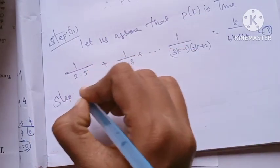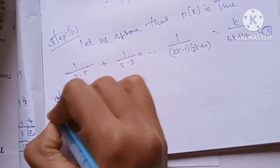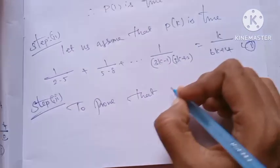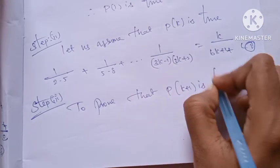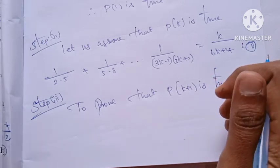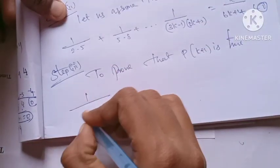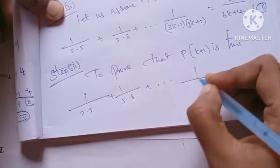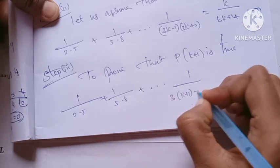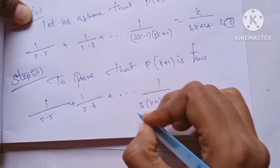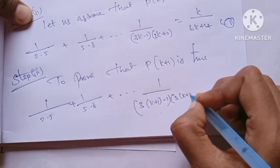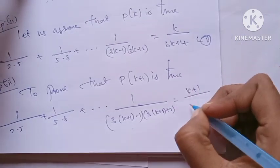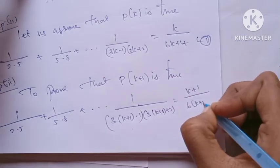Step 3: I am going to prove that P(k+1) is true. We need to show that 1/(2·5) + 1/(5·8) + ... + 1/((3(k+1)-1)(3(k+1)+2)) = (k+1)/(6(k+1)+4).